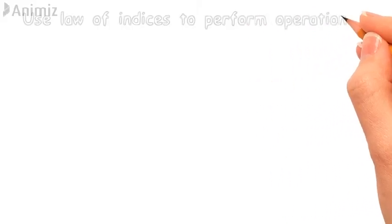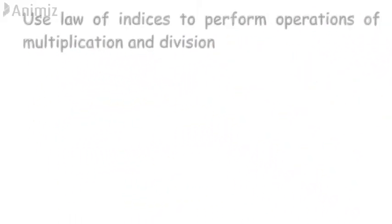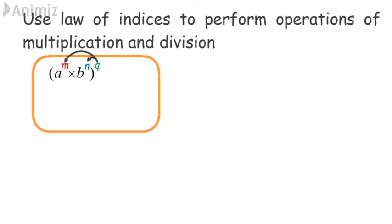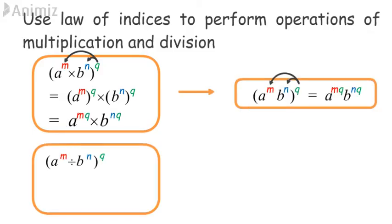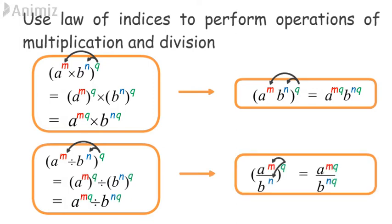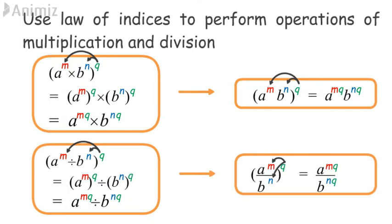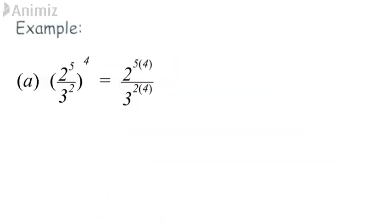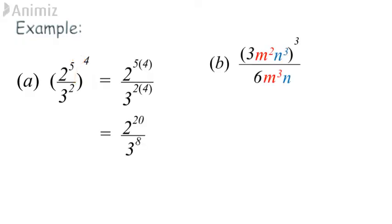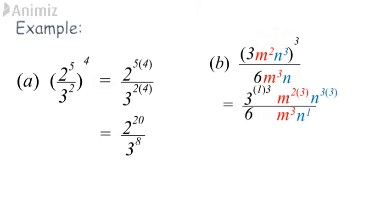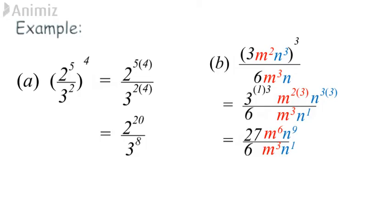Use the law of indices to perform operations of multiplication and division. The power q multiplies all indices m and n, giving a^(mq) and b^(nq). Similarly for division: a^(mq) divided by b^(nq). Example A: the power 4 times all indices inside the bracket gives the answer. Example B: the power of 3 times all indices inside the bracket — terms without a written index have index 1. After that, perform the division operation, subtracting indices for algebraic terms with the same base.